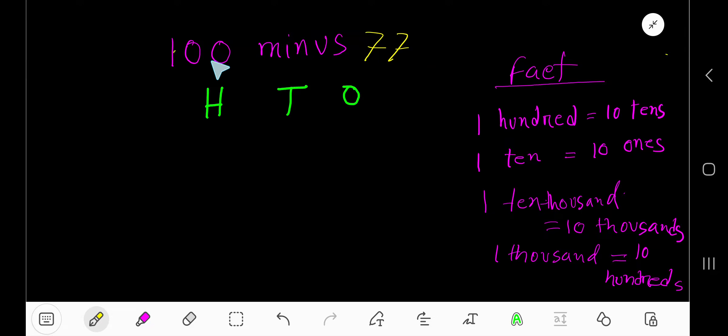100 minus 77. This 0 is in the 1's column. This 0 is in the 10's column. This 1 is in the 100's column. This 7 is in the 1's column. This 7 is in the 10's column.